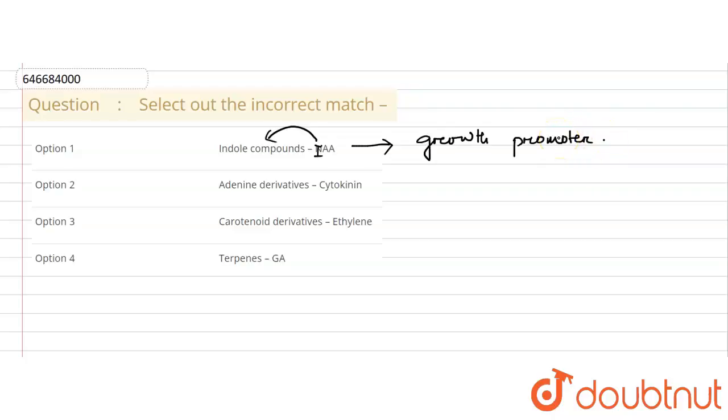It is present at the growing region, which is why it acts as a growth promoter. Hence, it is a correct match, so this is not the answer we are looking for.